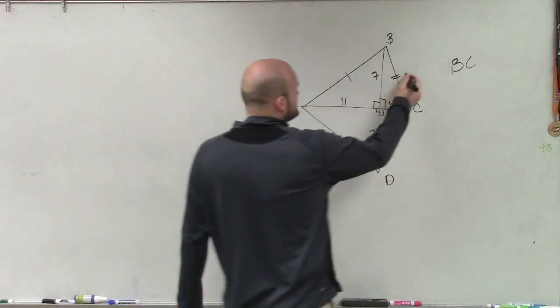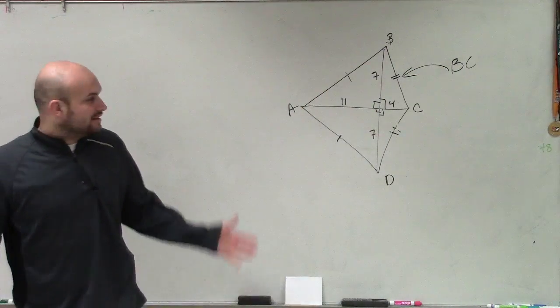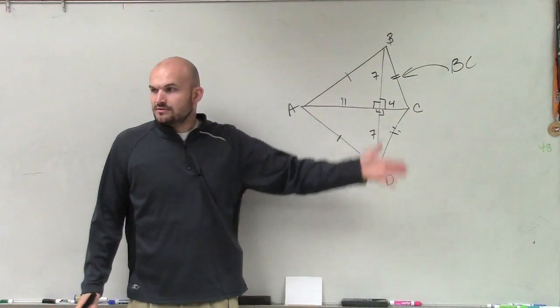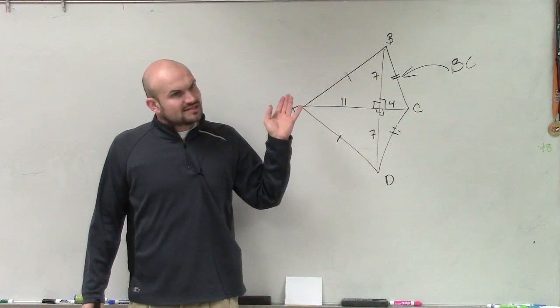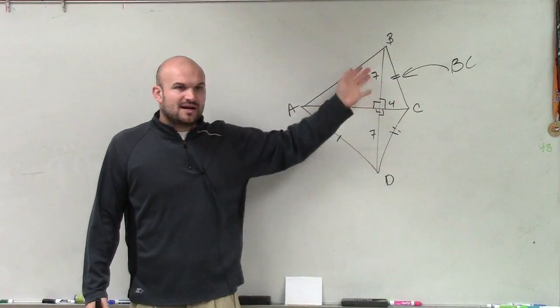Now they're asking us to find BC, which is right there. Well, I don't have any sides, do I? There's no sides on this kite. This is getting a little difficult because these are the lengths of the diagonals, but they're not really helping us out.